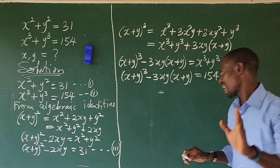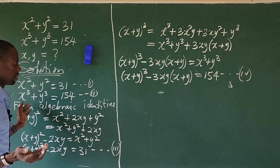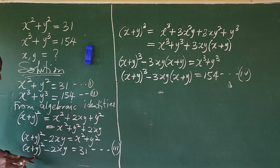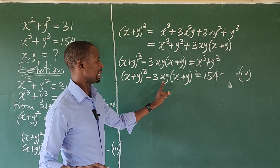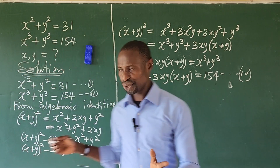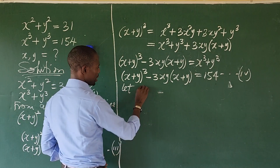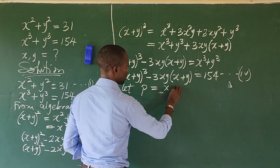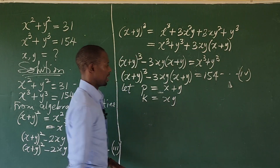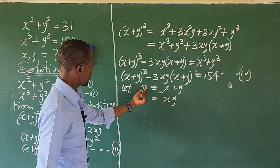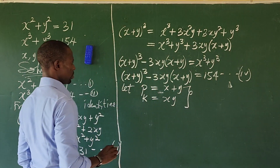Looking at equations 3 and 4, we can draw similarities — both contain X + Y and XY. So we substitute: let P equal X plus Y, and let K equal XY. Wherever we see X + Y, we put P; wherever we see XY, we put K.